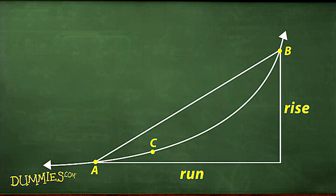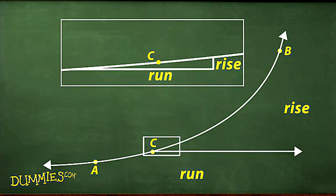What do you do if you want the exact slope at, say, point c? Zoom in. When you zoom in far enough, infinitely far, the little piece of the curve becomes straight, and you can figure the slope the old-fashioned way.